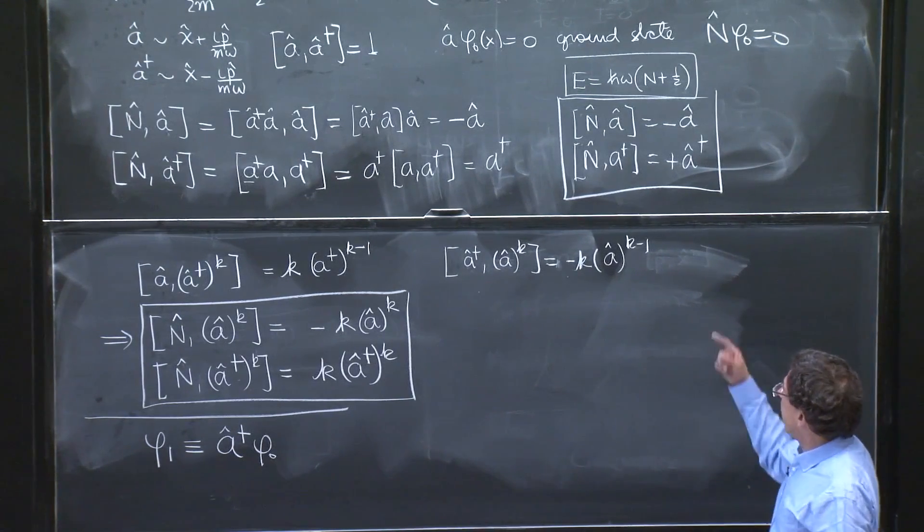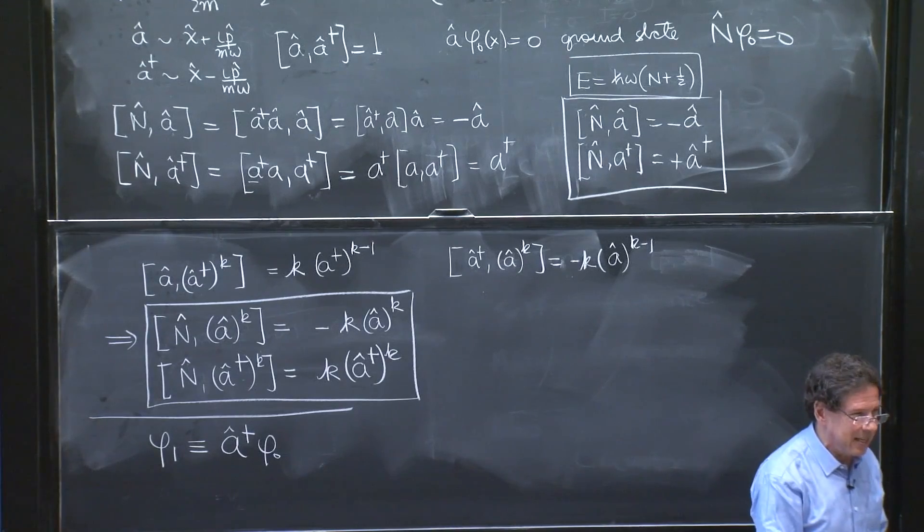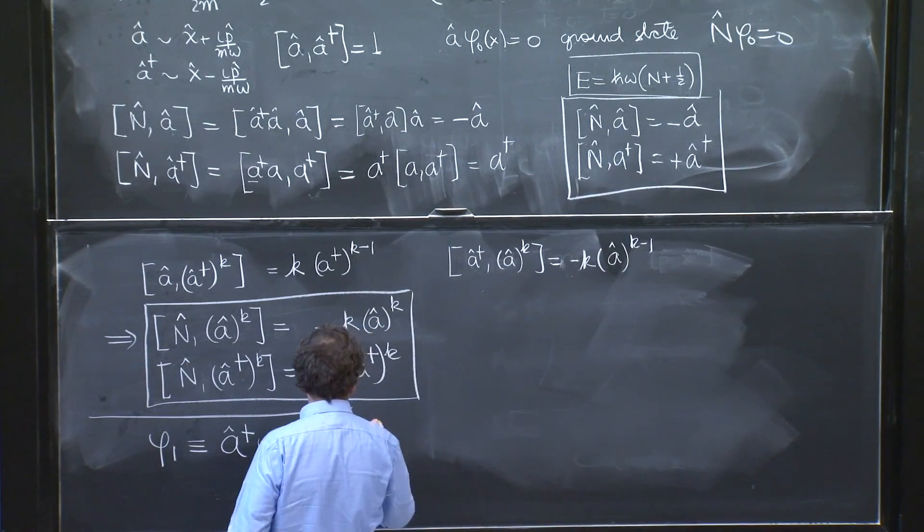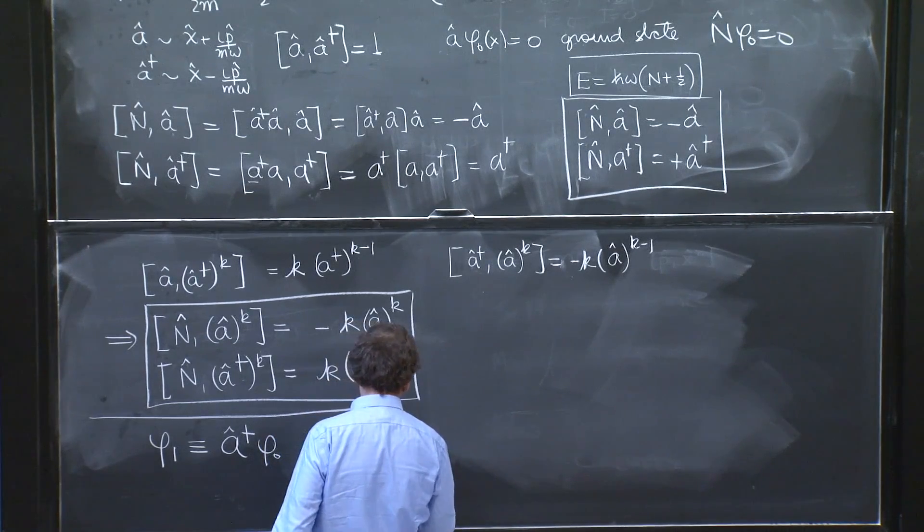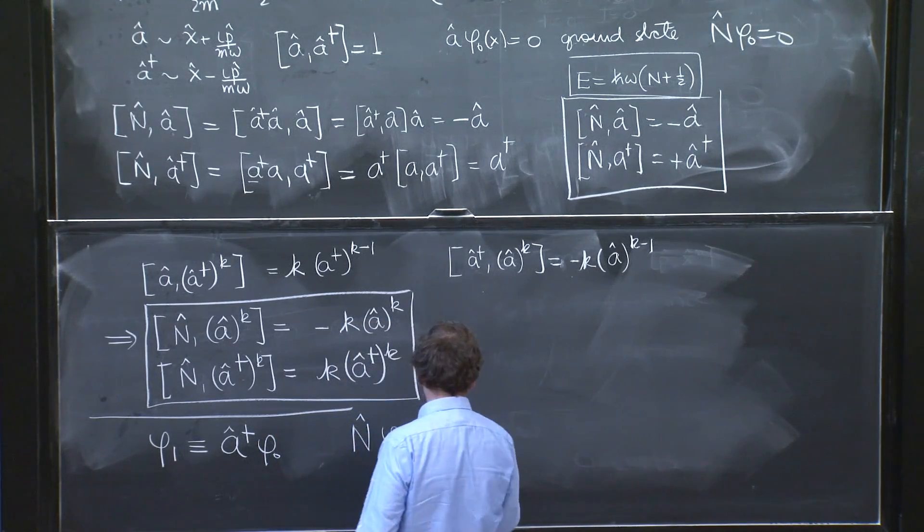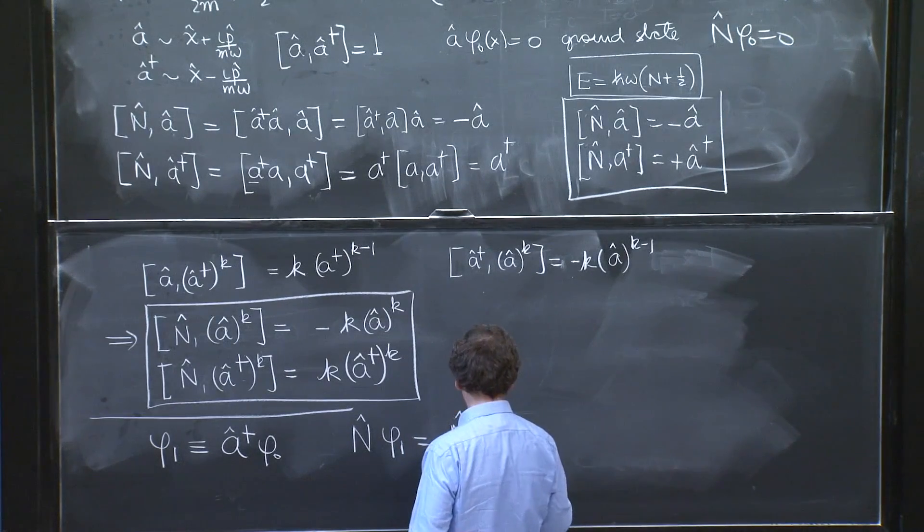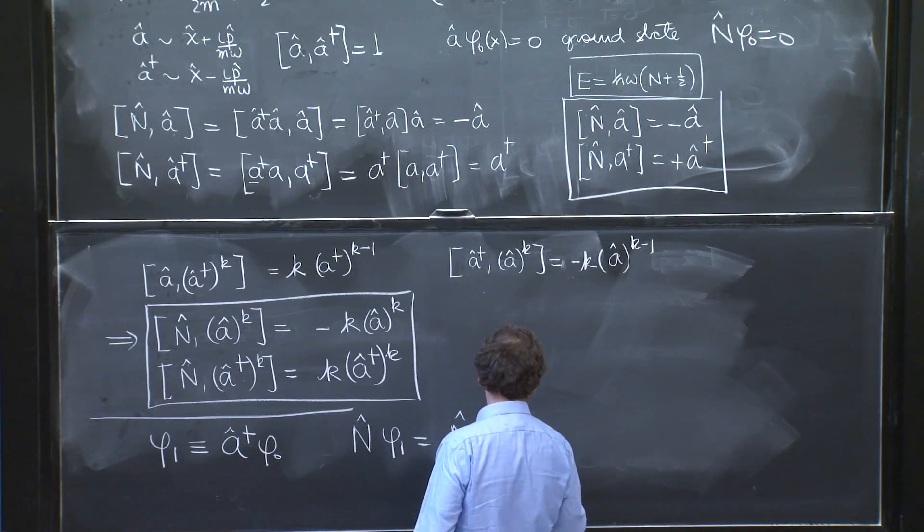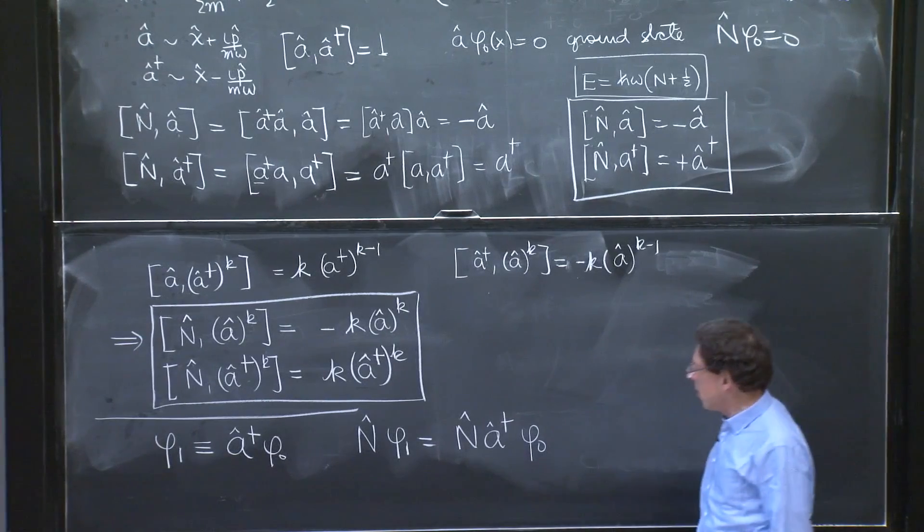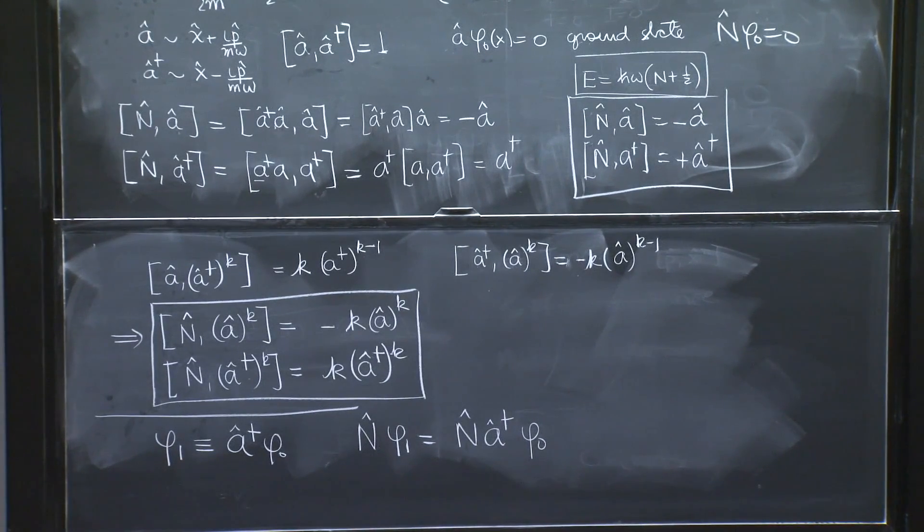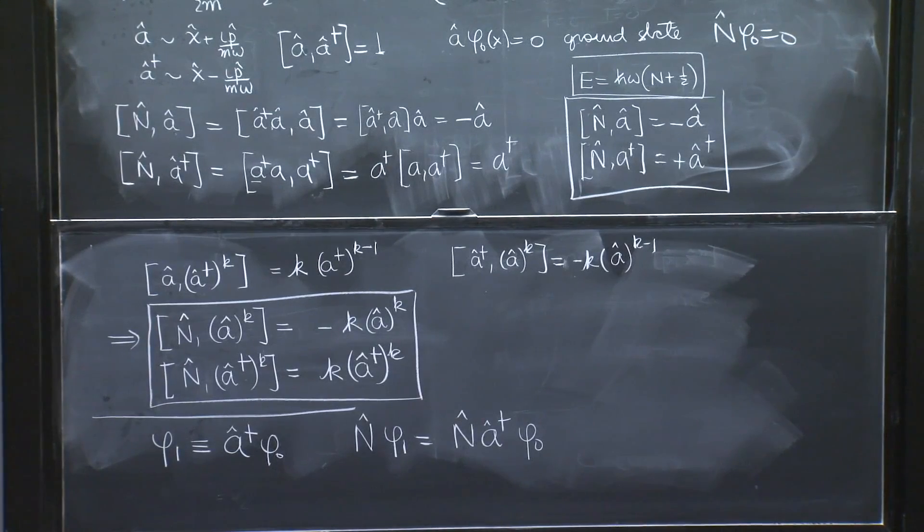Well, it is an energy eigenstate if it's a number eigenstate. And we can see if it's a number eigenstate by acting with a number operator. So n hat phi_1 equals n hat a dagger phi_0. Here comes the trick. Maybe it's too much to even call it a trick number one.